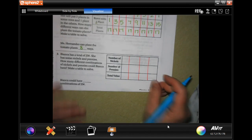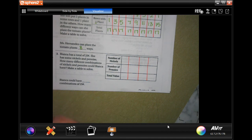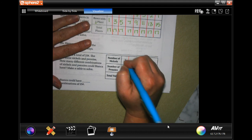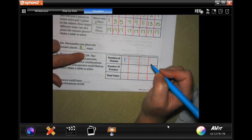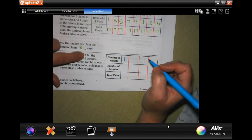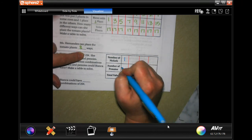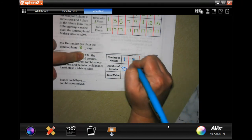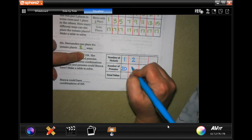Bianca has a total of 25 cents. She has some nickels and pennies. How many different combinations of nickels and pennies could Bianca have? Make a table to solve. She could have one nickel which is five cents and then she would have 20 pennies. She could have two nickels which is 10 cents plus 10 pennies.